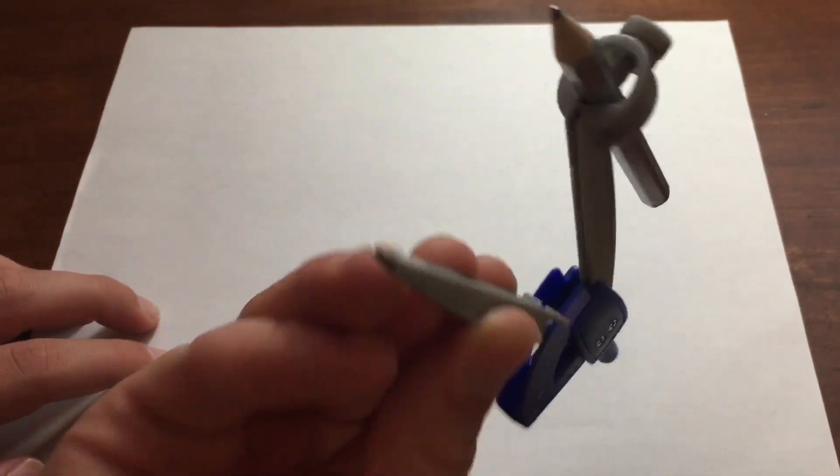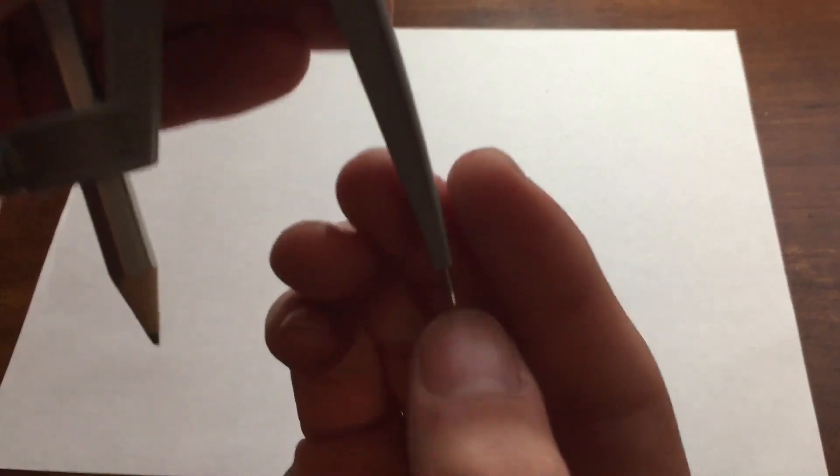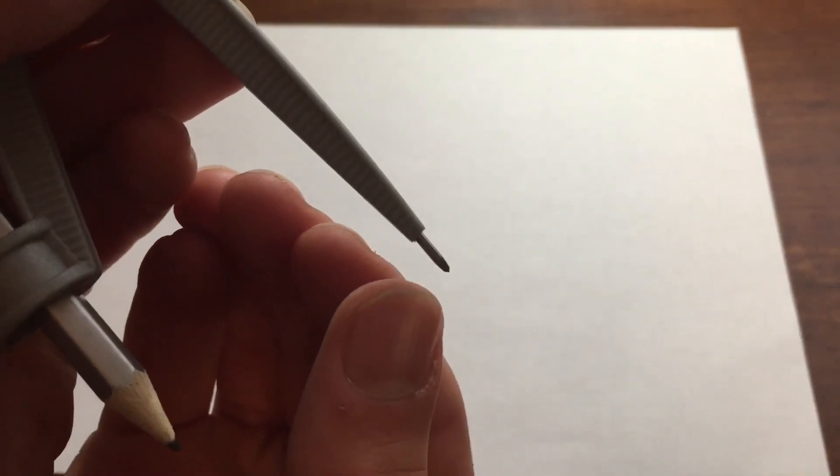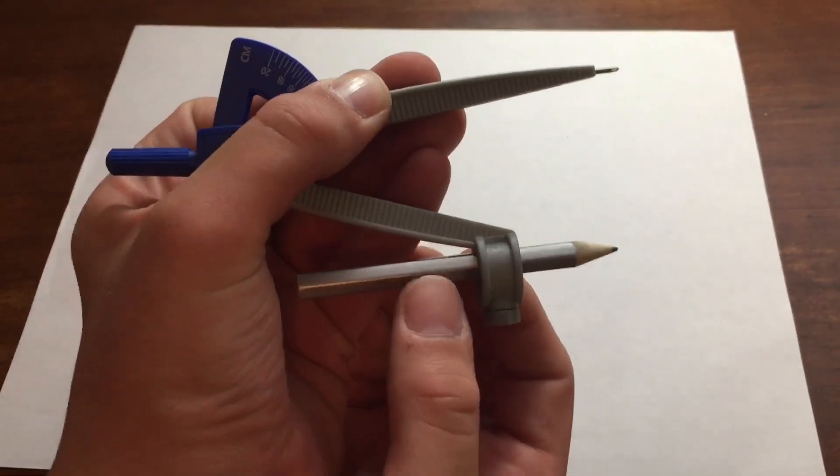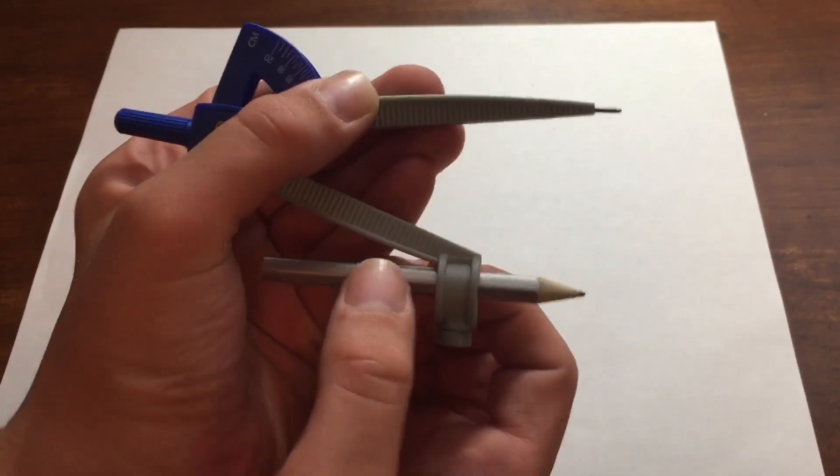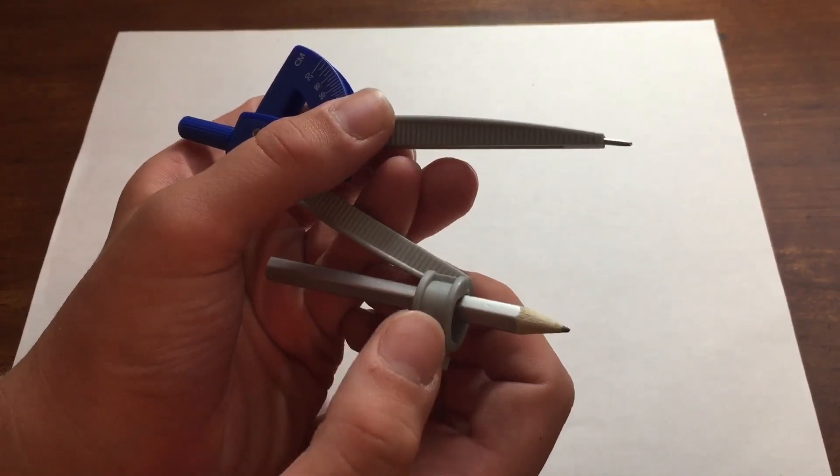So, we have two points on a compass. We have this point. This point is always going to be the midpoint of your circle and the pencil part. In some compasses you have to put your own pencil in, but this one comes with a pencil.